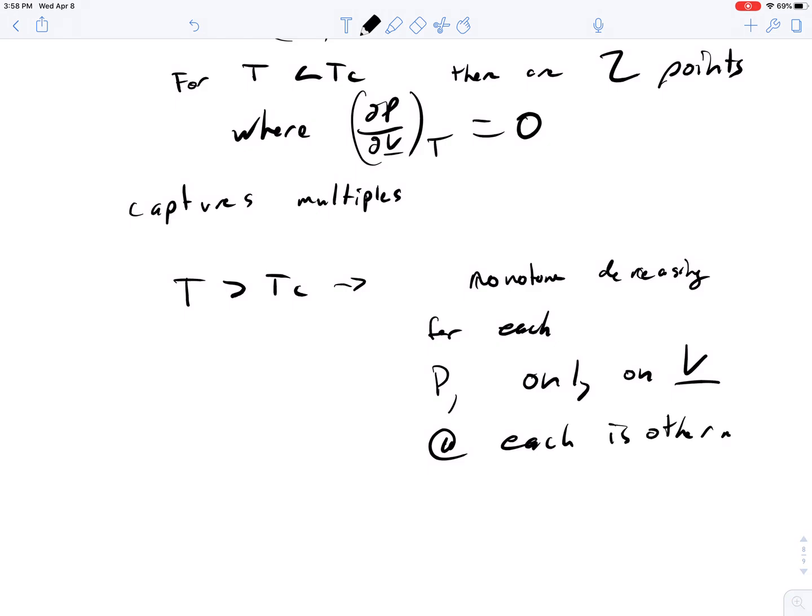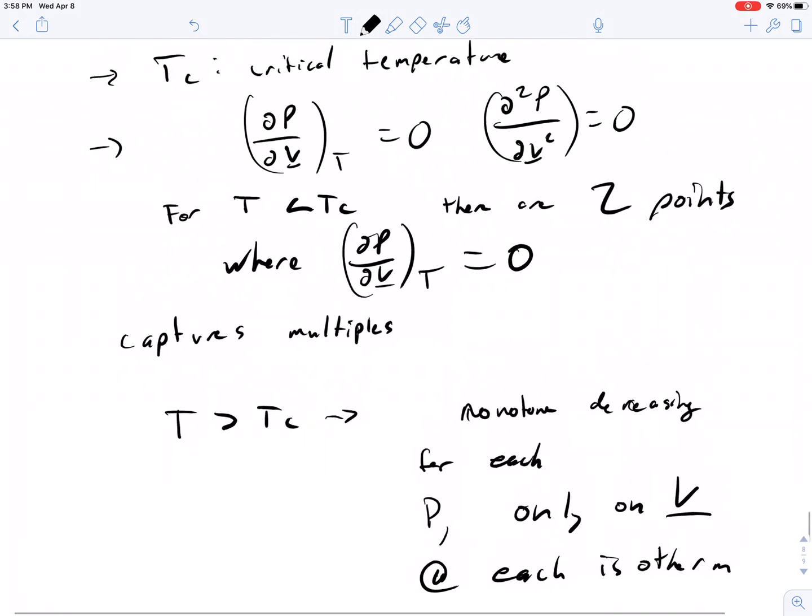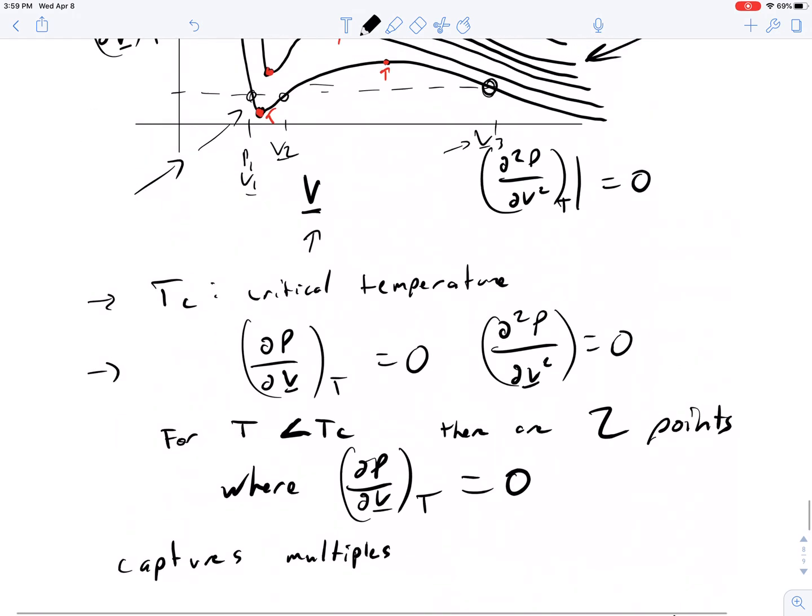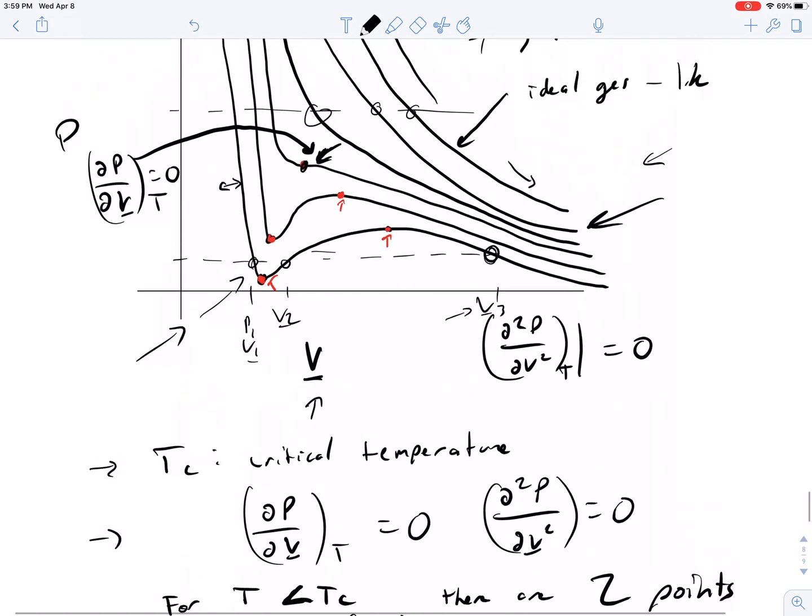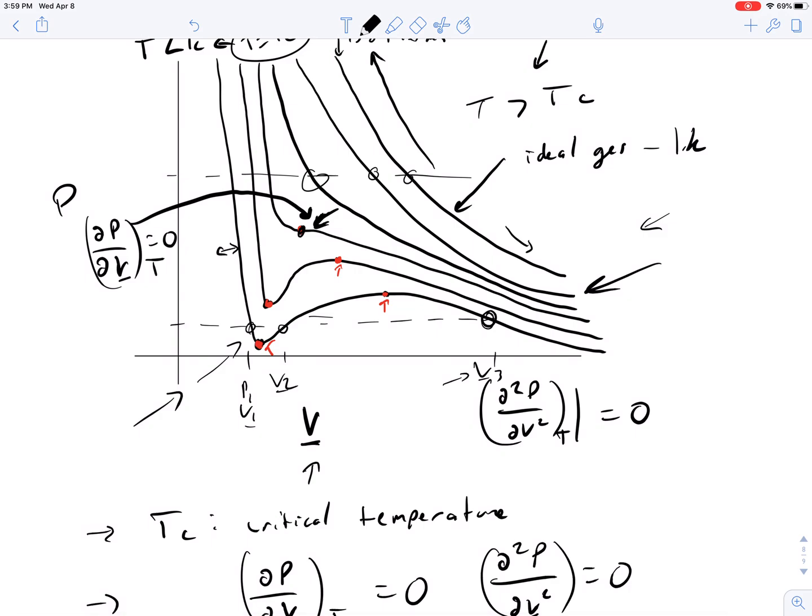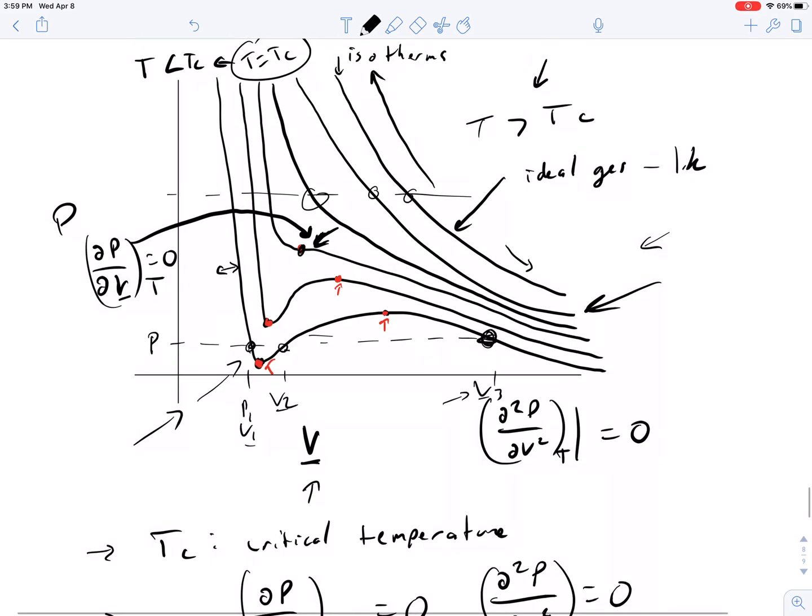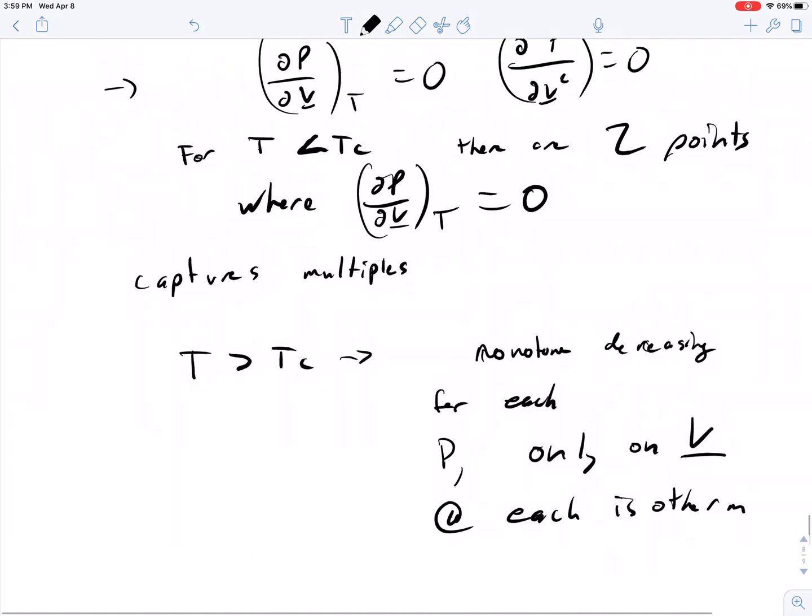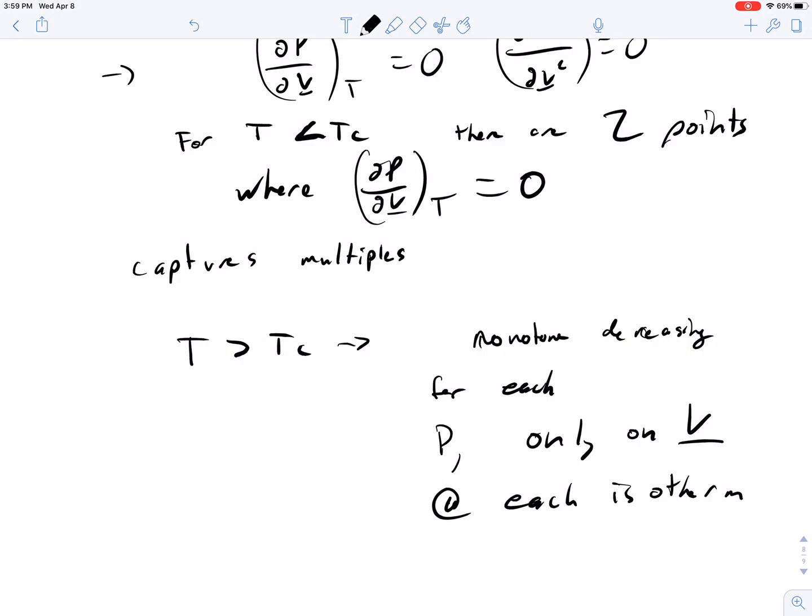So this is the difference between when you, that below that critical temperature, you can have multiple crossings. And for any given pressure, you'll have one, two, and three, for instance. But for the higher temperatures, you'll only have one spot. So that's ideal gas behavior.